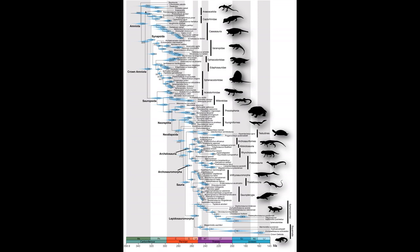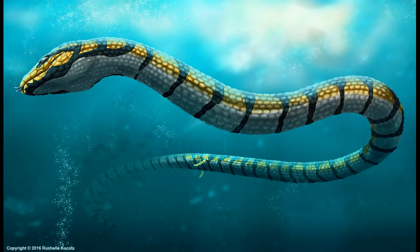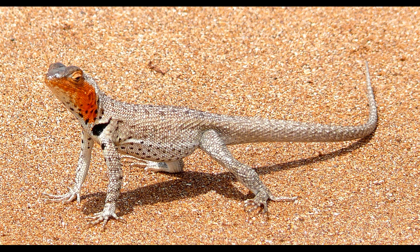Sister to the clade containing turtles, crocodilians, and birds is Lepidosauromorpha — the tuatara, lizards, and snakes. Snakes are actually a subset of lizards, being just one lineage of several with highly reduced limbs. And now that we have finally reached the lizards, we can discuss the lava lizard.